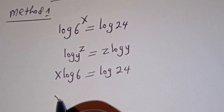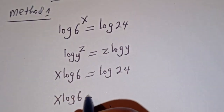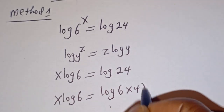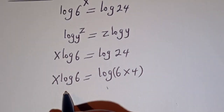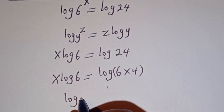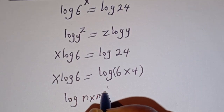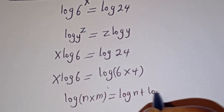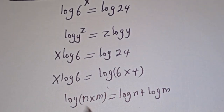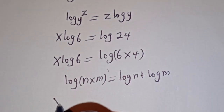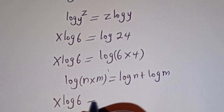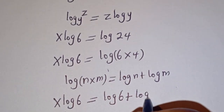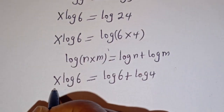Then x log 6 is equal to log 24, which can be written as log 6 multiplied by 4. If you have log n multiplied by m, this is equal to log n plus log m. Then this can be written as x log 6 is equal to log 6 plus log 4. Let's divide all through by log 6.